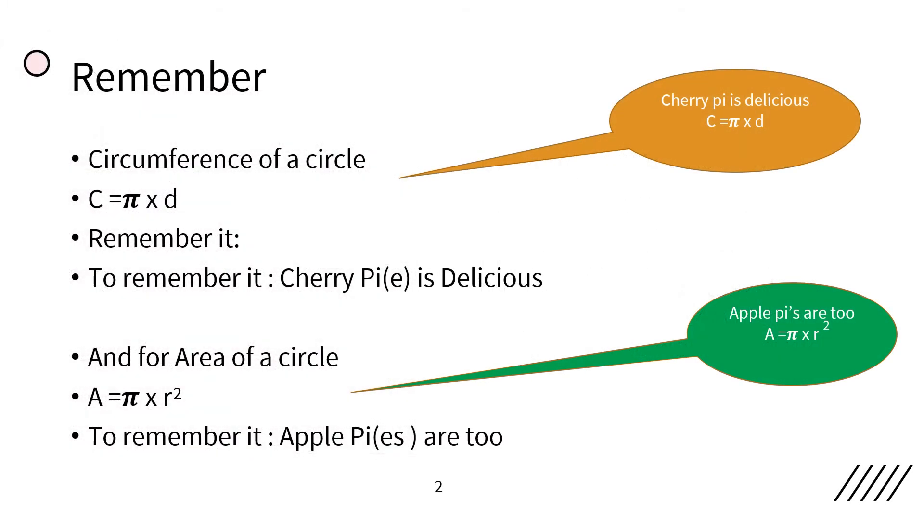Remember this. Circumference of a circle is Pi times the diameter. To remember this, you could say cherry pie is delicious.